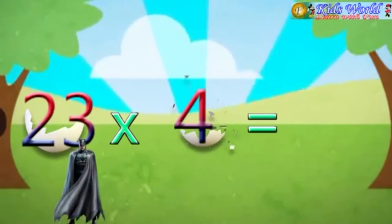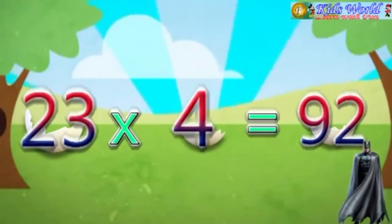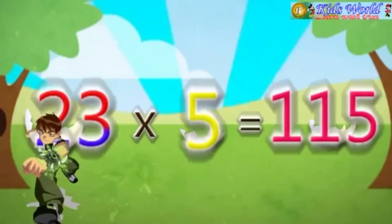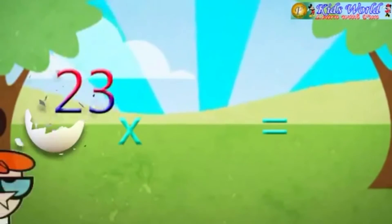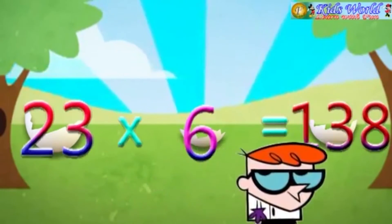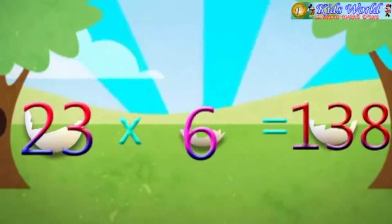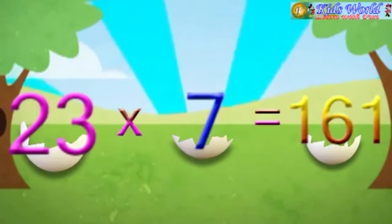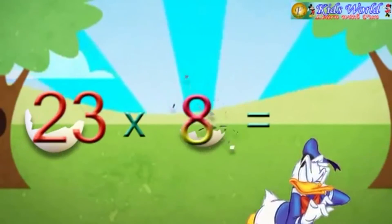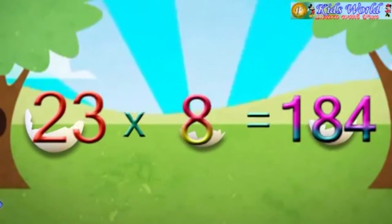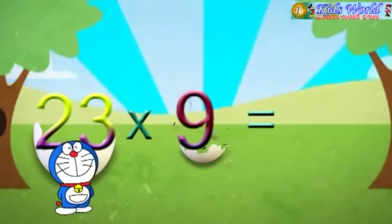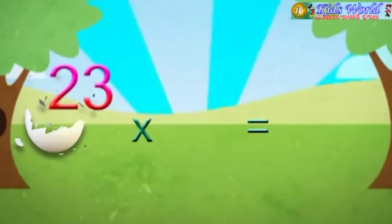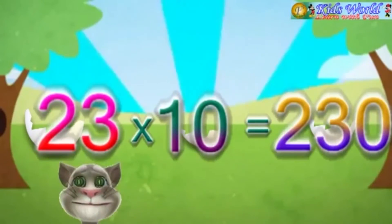23 into 4 is equal to 92. 23 into 5 is equal to 115. 23 into 6 is equal to 138. 23 into 7 is equal to 161. 23 into 8 is equal to 184. 23 into 9 is equal to 207. 23 into 10 is equal to 230.